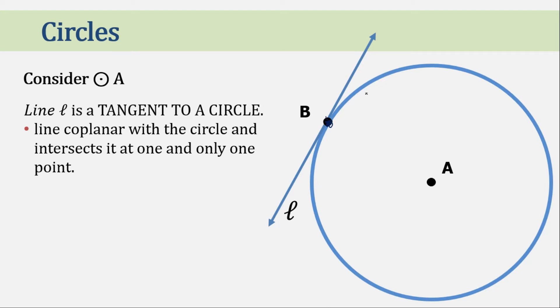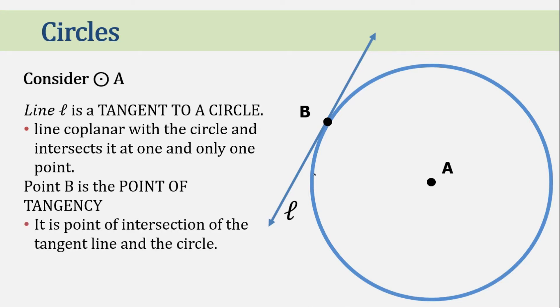There's a line and there's a circle and they intersect at only one point. That is a line tangent to a circle. Now point B is what we call the point of tangency. That's the point of intersection of the tangent and the circle.